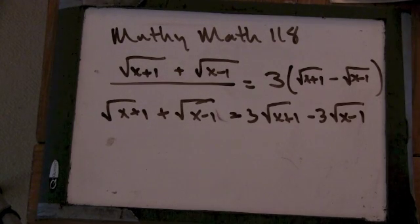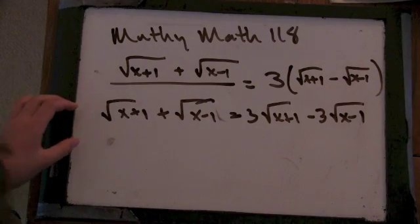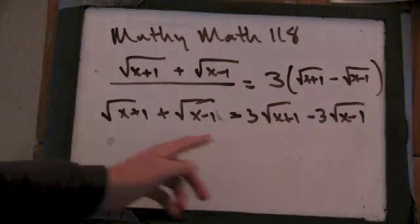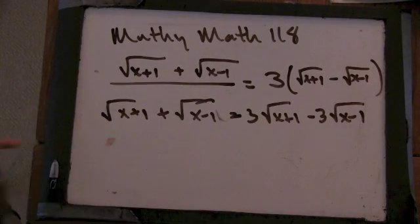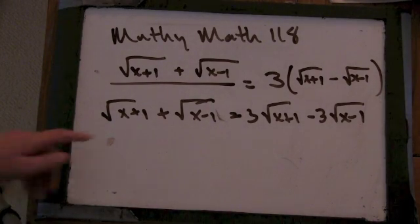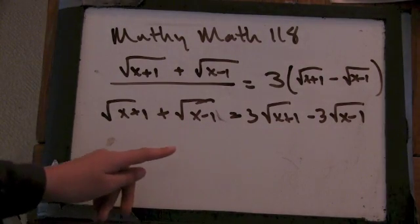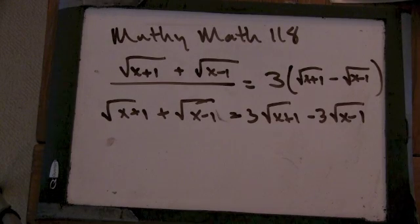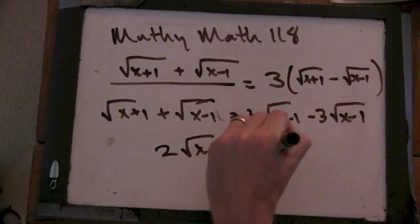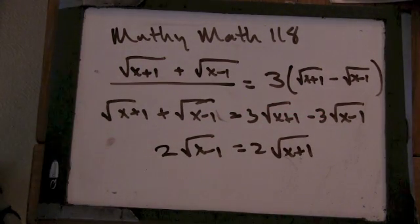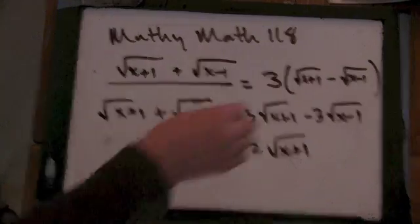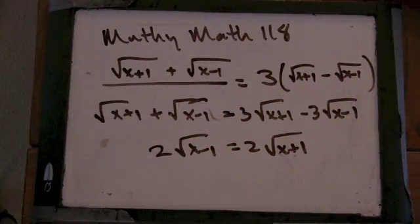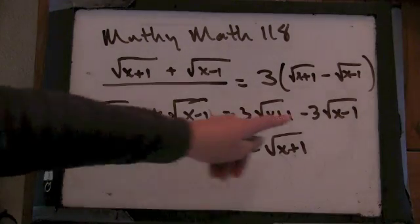What are you going to do now? I'm going to put the x plus 1's on one side. I'm going to move this here and this here. So I get 2 times the square root of x minus 1 equals 2 times the square root of x plus 1. Why? Because you have a minus there. So the 4 comes from 1 and 3 — you have negative 3 and then negative turns to positive.